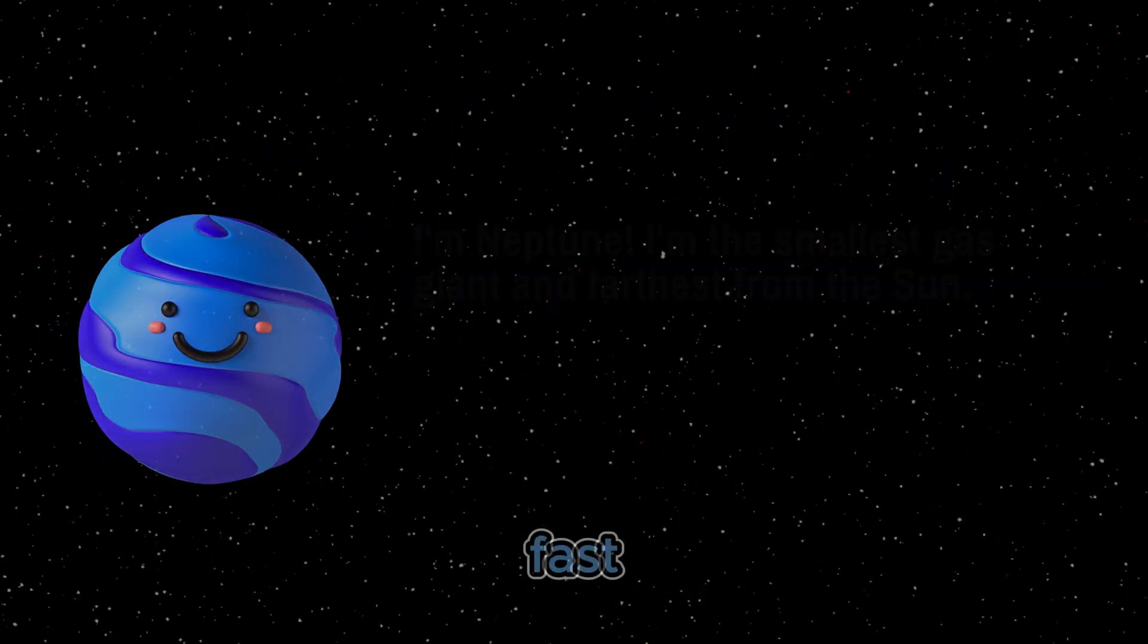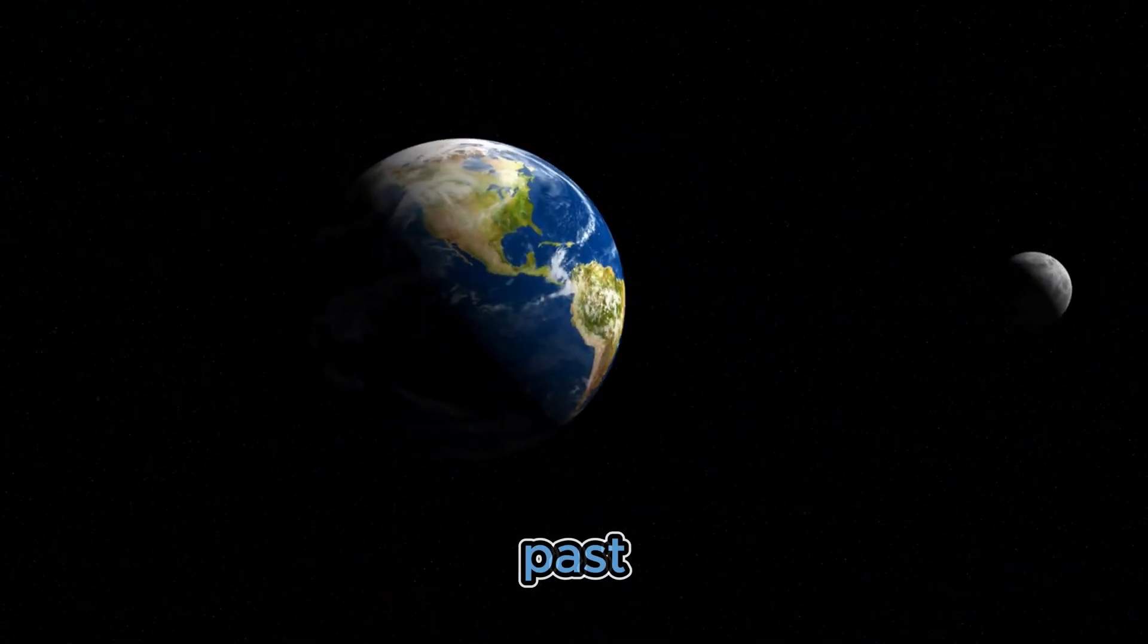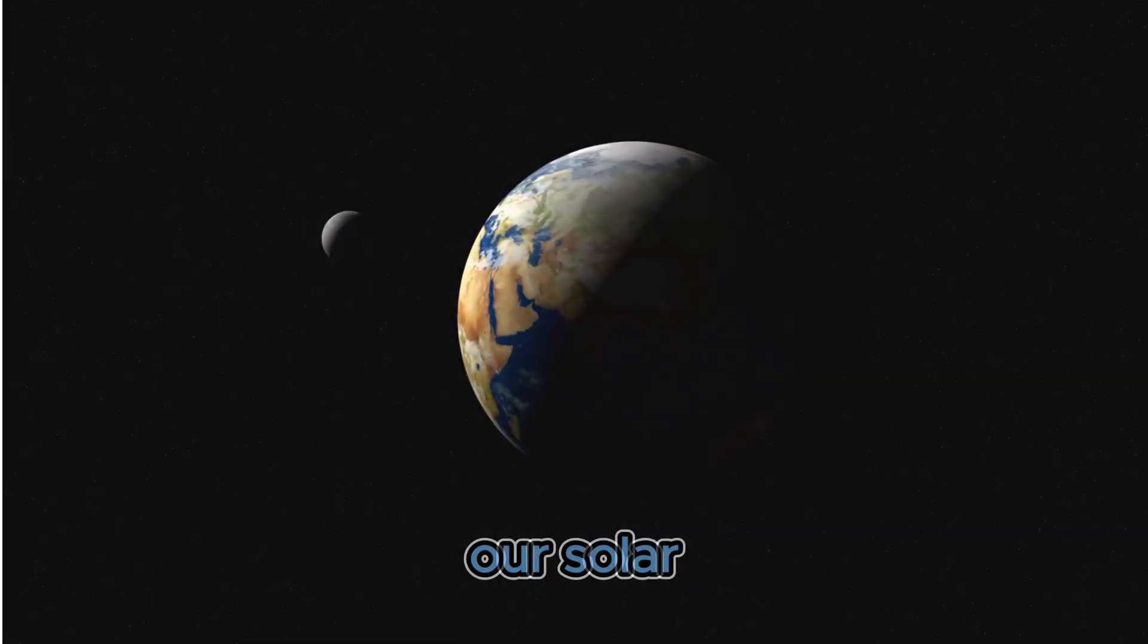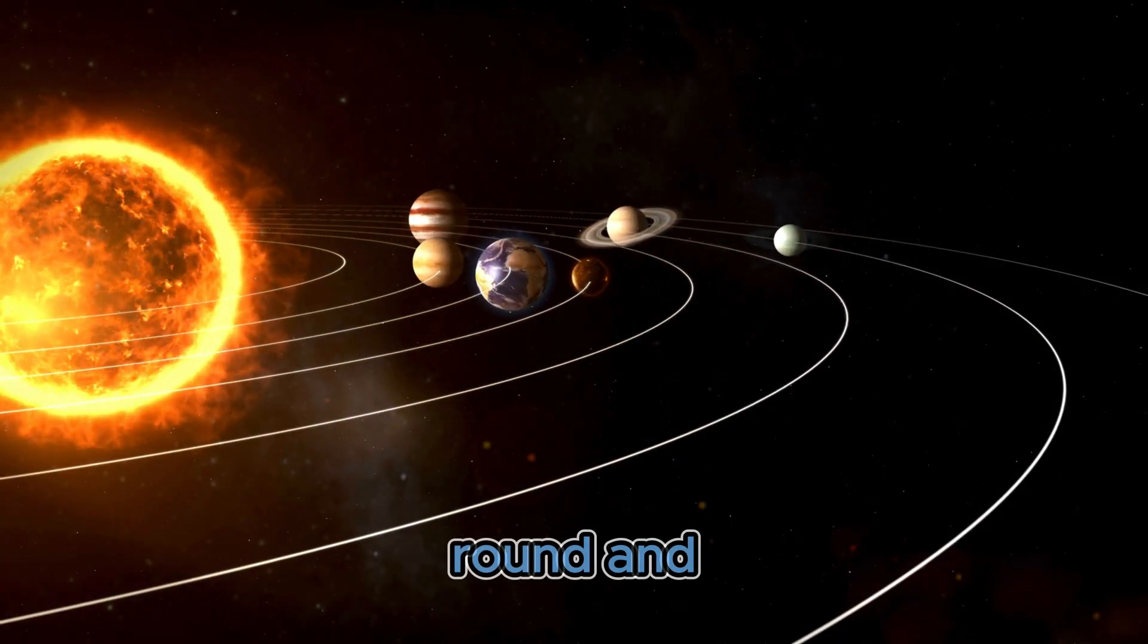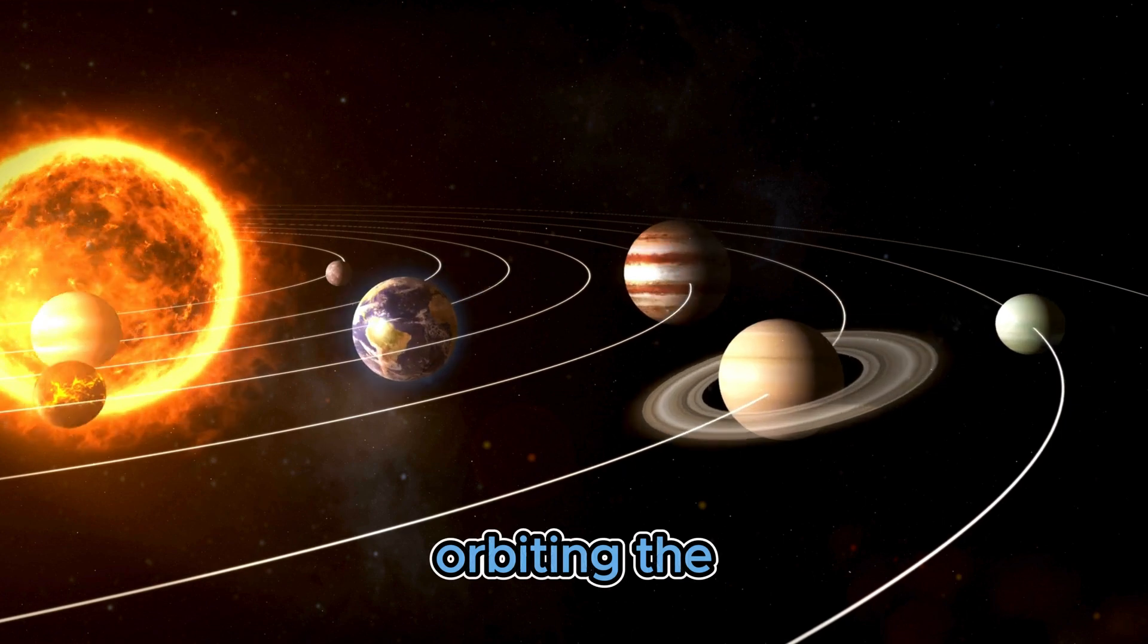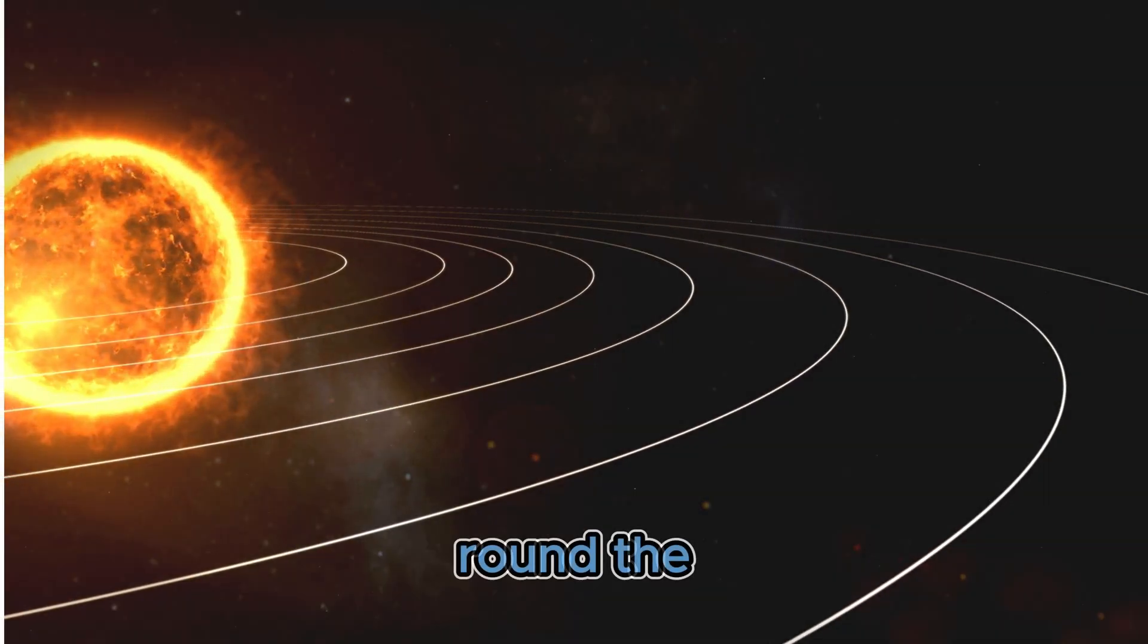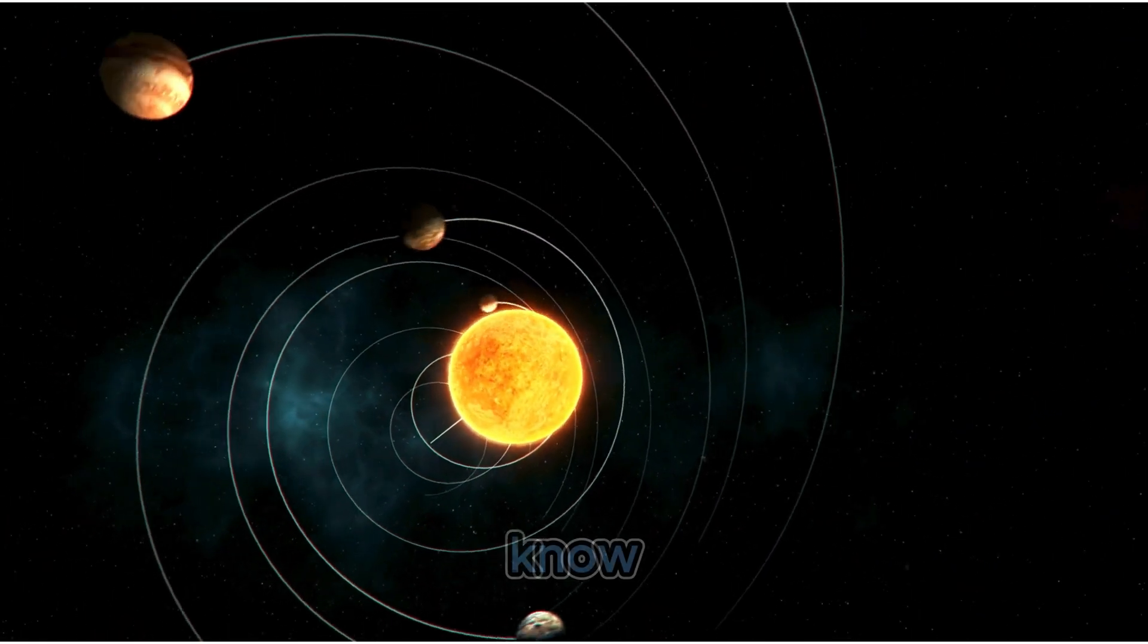Neptune's winds are really fast, through the dark it zooms on past. Eight big planets, moons and more, our solar system we explore. Round and round the planets go, orbiting the sun you know.